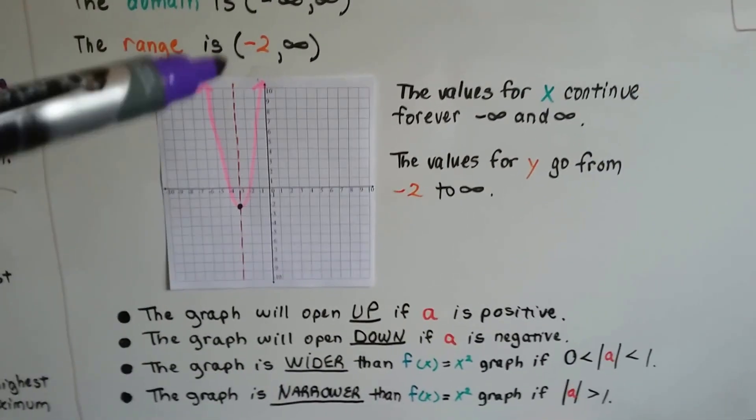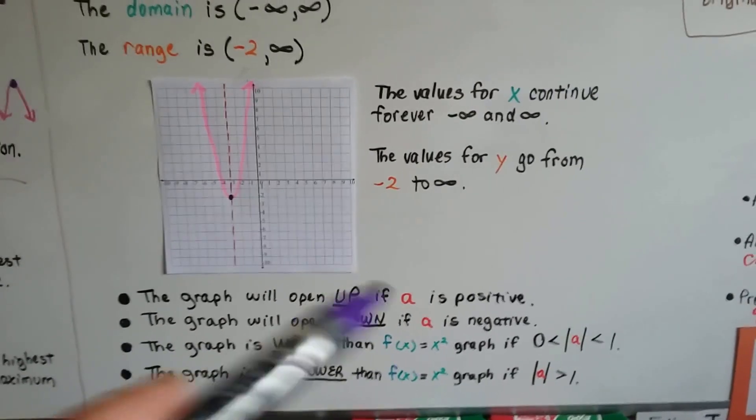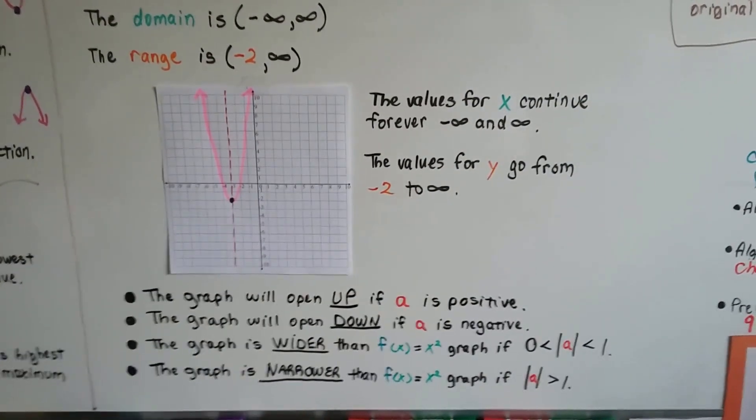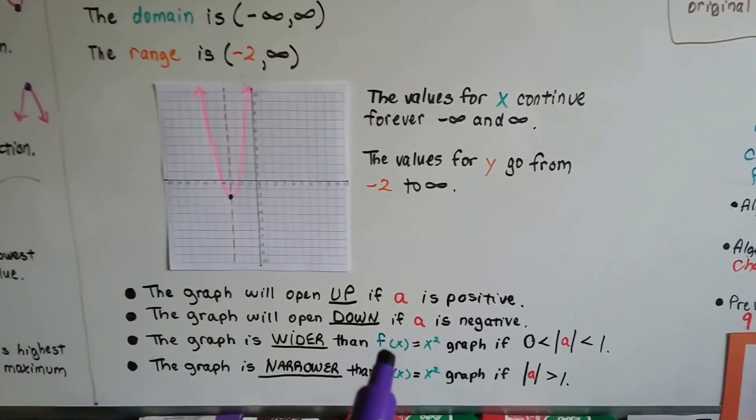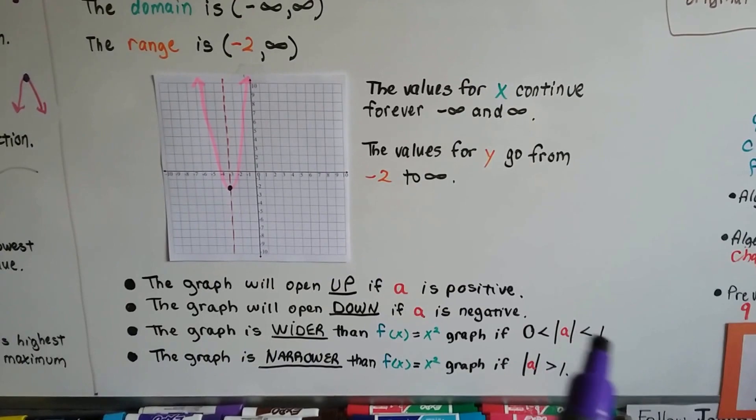So the graph is going to open up if the a value is positive. The graph is going to open downward if the a value is negative. The graph is going to be wider than the graph of f(x) = x² if the absolute value of a is between zero and one.